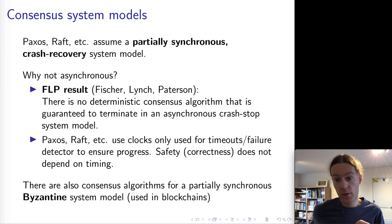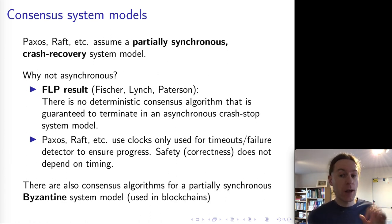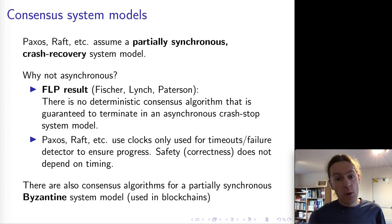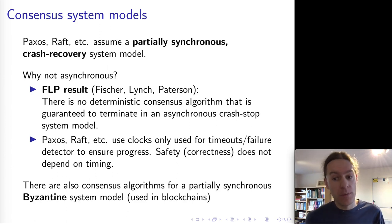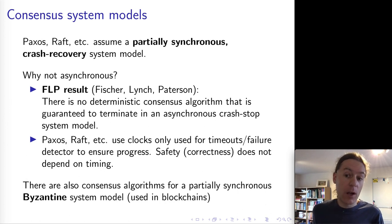It is also possible to weaken the assumption about the crash-recovery system model, going all the way down to a Byzantine system model where some nodes may behave maliciously. It is possible to do consensus in that kind of system, and Byzantine fault-tolerant consensus algorithms are used in the context of some cryptocurrencies and blockchains. However, these Byzantine fault-tolerant algorithms are rather more complex and a lot less efficient. For the purpose of this course we will concentrate on Raft, which is a non-Byzantine algorithm assuming a crash-recovery model, leaving Byzantine algorithms out of scope.